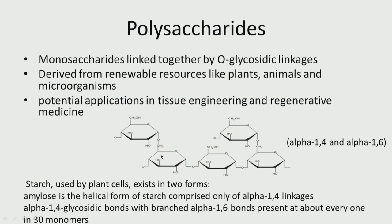We can have alpha linkage or beta linkage. We can have alpha 1,4 depending on how two adjacent monosaccharides are connected, or alpha 1,6. These polysaccharides are derived from renewable sources like plants, animals, and microorganisms. They can be used in regenerative medicine and tissue engineering, forming very good scaffolds. For biodegradable scaffolds this is very good, but they will have poor mechanical strength.